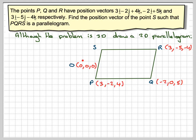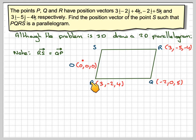Now it doesn't matter that these coordinates don't look right in 2D. The first thing we should know is that the vector RS would be the same as vector QP if this is a parallelogram. It's very, very important to realise that: if I can find QP, I also have the vector RS.